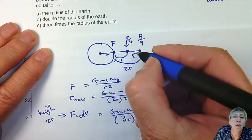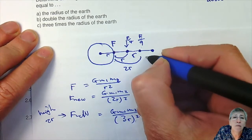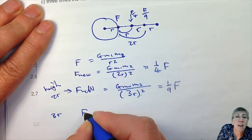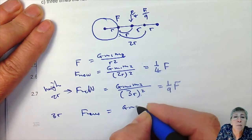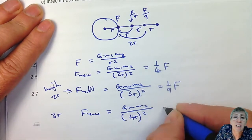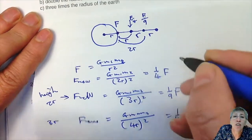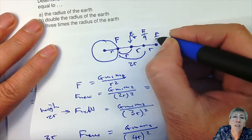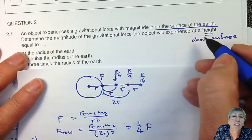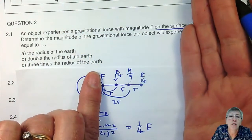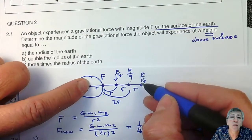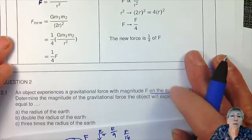And the last one: at a height of 3R above the earth, that means 4R between the centers. F new equals G M1 M2 over (4R) squared, giving one sixteenth of the original force — F over 16. The most important thing is to understand the difference between height, which is above the surface, and R in your equation, which is from the center.